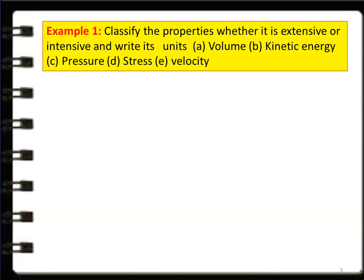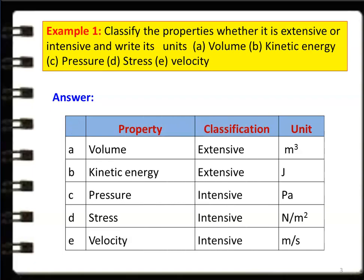Example number 1: Classify the properties whether extensive or intensive, and write its unit. A. Volume. B. Kinetic energy. C. Pressure. D. Stress. E. Velocity. Answer: Volume is an extensive property; unit is meter cube. Kinetic energy is also an extensive property which depends on mass; unit is joules or newton meter. Pressure is an intensive property, independent of mass; unit is pascal or newtons per meter square. Stress is also an intensive property; unit is newtons per meter square. Velocity is an intensive property independent of mass; unit is meters per second.